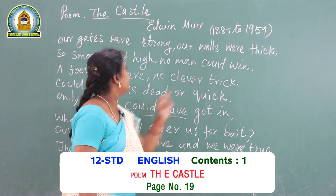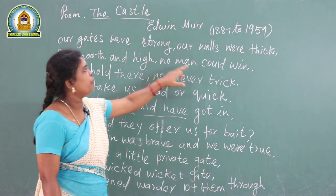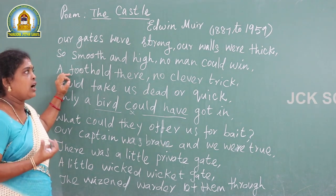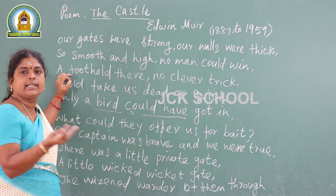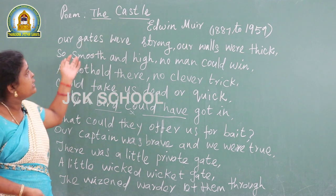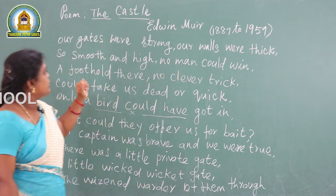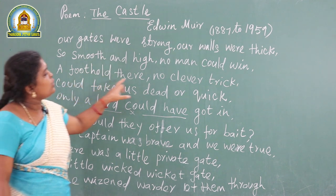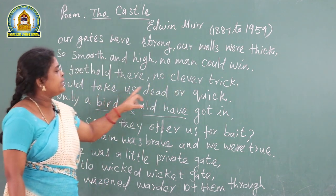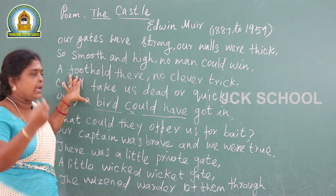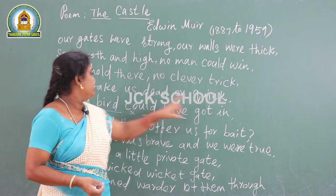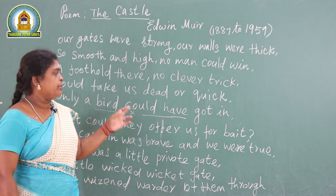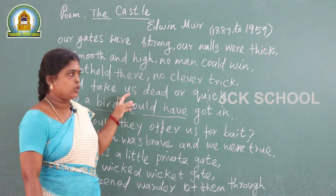Our gates were strong, our walls were thick, so smooth and high, no man could win them. The poet described that no one could enter the castle because the walls are very strong and the gates are very thick, so the soldiers are very happy. Then: 'A foot could bear no clever trick, who could take us dead or quick.' No one could catch them dead or alive. Only a bird could have gotten in — the only one who could enter the castle is a bird, because only a bird can fly over. No man could enter the castle.